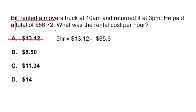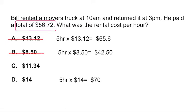Moving to option 2, you multiply 5 hours times $8.50, which gives $42 — also incorrect, so we cross that out. For option D, 5 hours times $14 gives $70 — again incorrect, cross that off. Finally, option C: 5 hours times $11.34 gives the correct response of $56.72. So this is a second way to solve that problem if you got stuck.